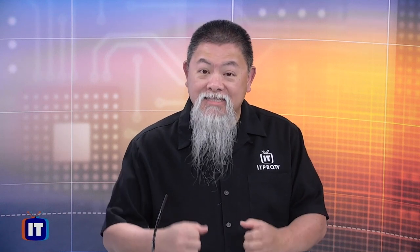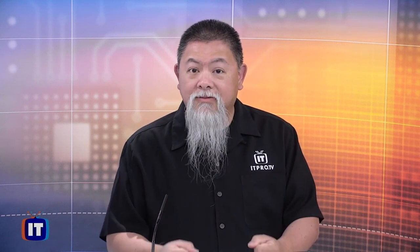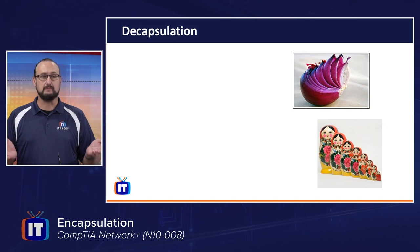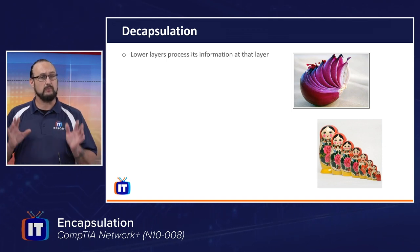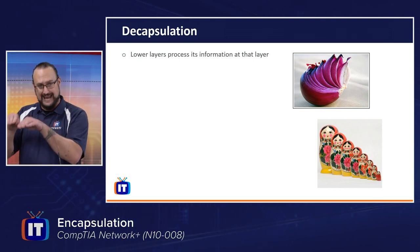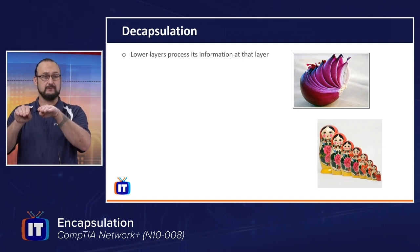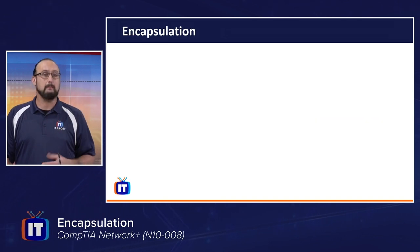This is really important because we now understand that when we send data, we're encapsulating it. When we receive data as the destination, we do a full decapsulation until we can open it up with the application and read that data. This occurs on devices that are sending and receiving, but portions of it also happen on devices along the way. Top to bottom is encapsulation; bottom to top is decapsulation. The lower layers process the information at their layer and then it moves up to the next layer, going back up the stack.